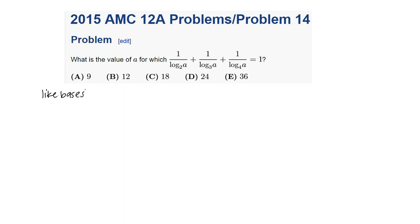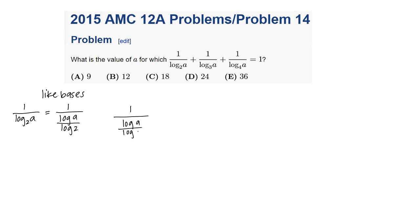If I have 1 over log base 2 of a, using the change of base formula this equals 1 over (log a over log 2). If you ever have trouble remembering which log goes on top, just remember the bigger one goes over the smaller one. So let's apply the change of base formula to all three terms: we get 1 over (log a over log 2), plus 1 over (log a over log 3), plus 1 over (log a over log 4), all equal to 1.